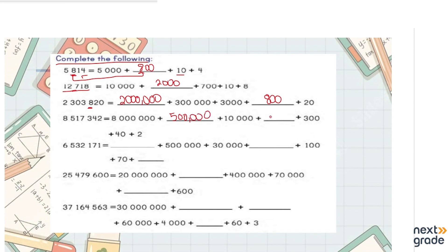Then we have ten thousand, seven thousand, three hundred, forty, and two. Let's solve the next question — it's again a seven-digit number. I want you to note this down on your rough copy and do it yourself. I'm going to give you a second to identify these numbers.